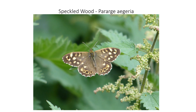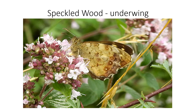Moving on to the browns — we have the speckled wood. If you see a butterfly bombing around the tops of trees, or it's just come off the meadow and flown into a tree, it's likely to be a speckled wood. Quite a subtle pale brown with creamy blotches. This one is feeding on what looks like water mint.